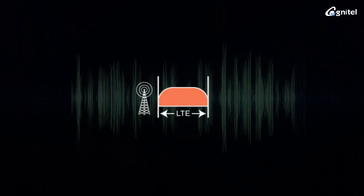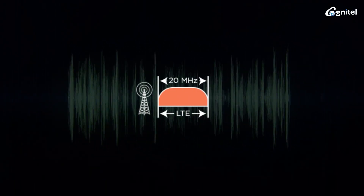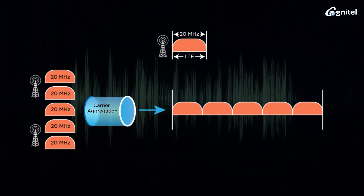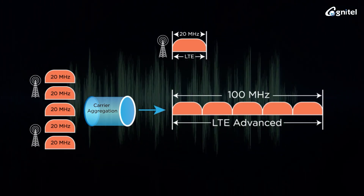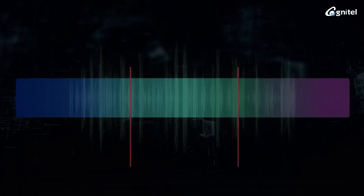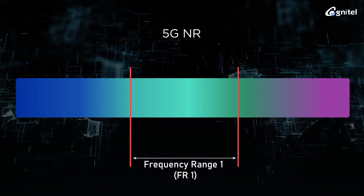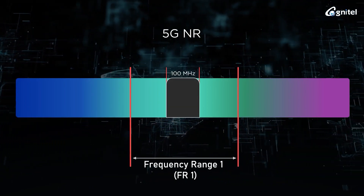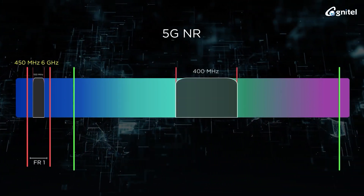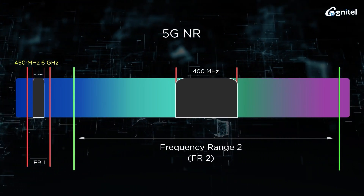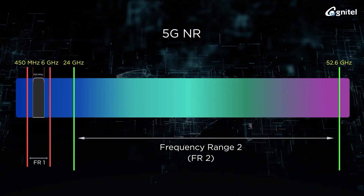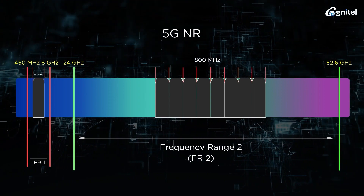LTE carriers used to be narrower in bandwidth — up to 20 MHz maximum — that could be aggregated together to create a channel bandwidth up to 100 MHz in LTE Advanced, or up to 640 MHz in LTE Advanced Pro. In comparison, 5G NR maximum carrier bandwidth is up to 100 MHz in frequency range 1, from 450 MHz to 6 GHz, or up to 400 MHz in frequency range 2, from 24 GHz to 52.6 GHz, that can be aggregated with a maximum bandwidth of 800 MHz.